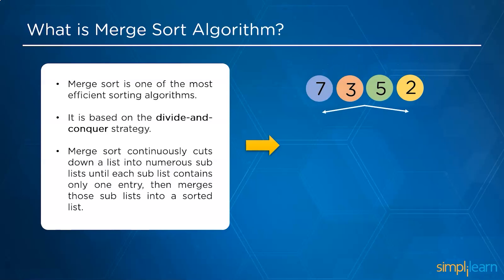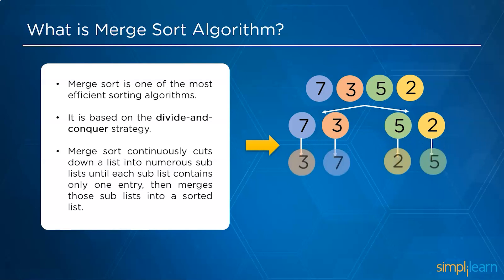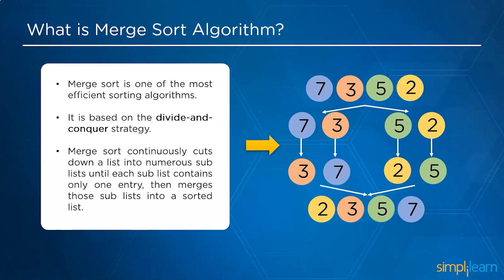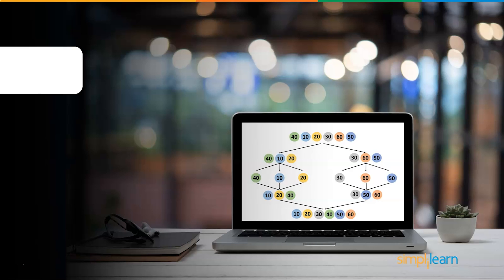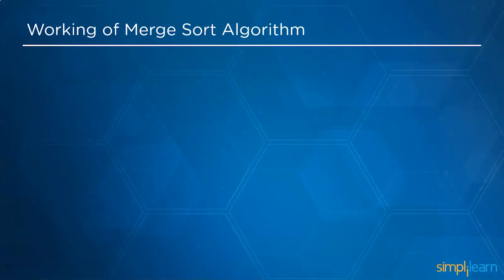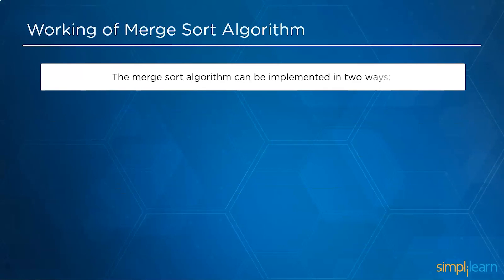As an example on screen, we have four elements: seven and three in the left half and five and two in the right half. After dividing the four elements in half, we combine all the items in ascending order — that is two, three, five and seven. In the next segment, we will understand how this happened by learning the working procedure of merge sort.